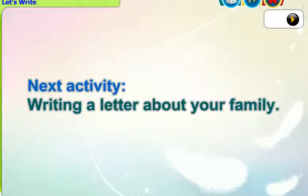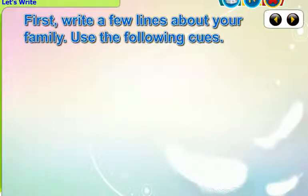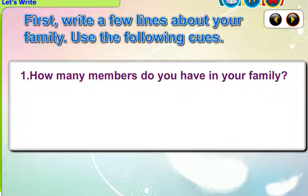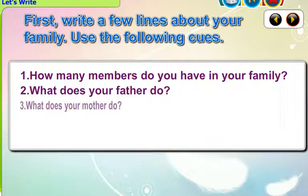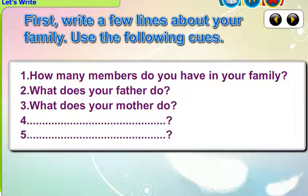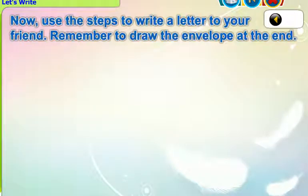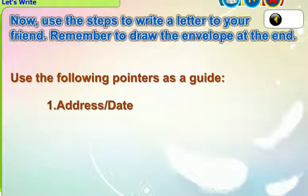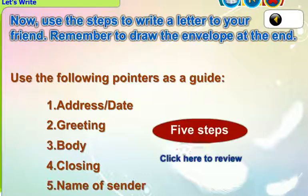Next activity: Writing a letter about your family. First, write a few lines about your family using the following cues: How many members do you have in your family? What does your father do? What does your mother do? Now, use the steps to write a letter to your friend. Remember to draw the envelope at the end. Use the following pointers as a guide: Address, Date, Greeting, Body, Closing, Name of Sender.